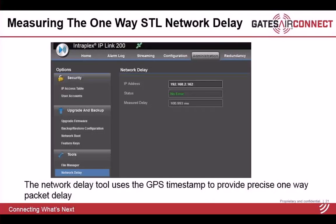A critical aspect of determining the target delay value is knowing precisely what the one-way studio-to-transmitter link delay is. To support this, the IP-Link system has a built-in tool that measures one-way delay using GPS timing reference, making it very accurate — essentially a GPS-based one-way delay measurement utility.